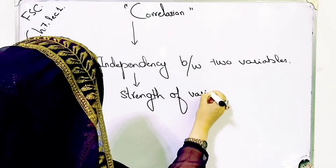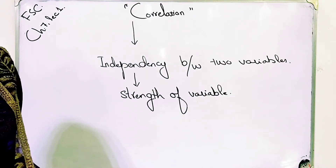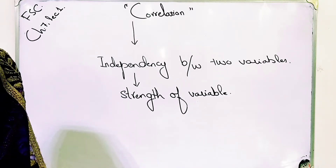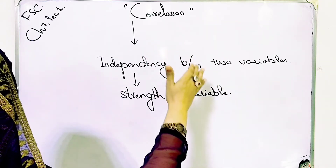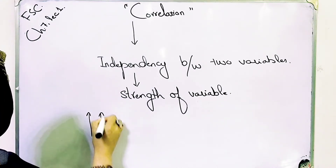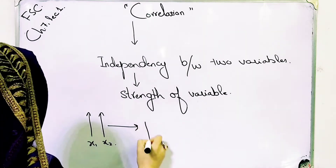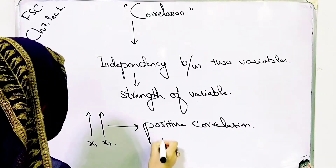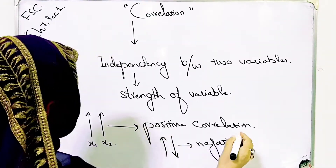Now if we divide correlation into types: covariance is a measure of the degree to which any two variables vary together. Two variables are said to be correlated if they tend to simultaneously vary in some direction. If one variable increases and the other variable also increases, that is called positive correlation. If one variable increases and the second variable decreases, that is called negative or inverse correlation.